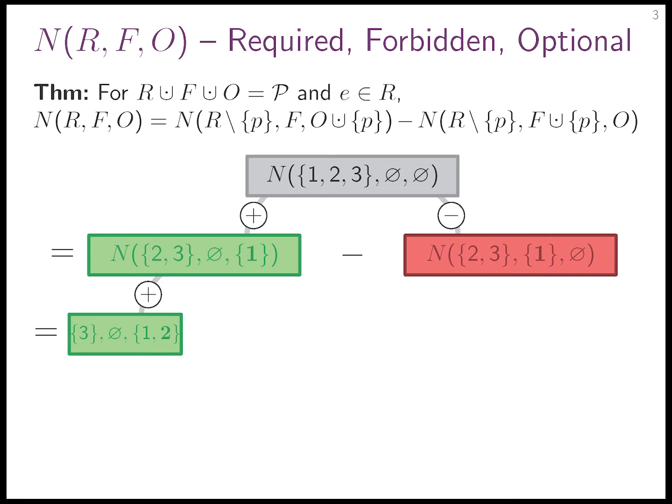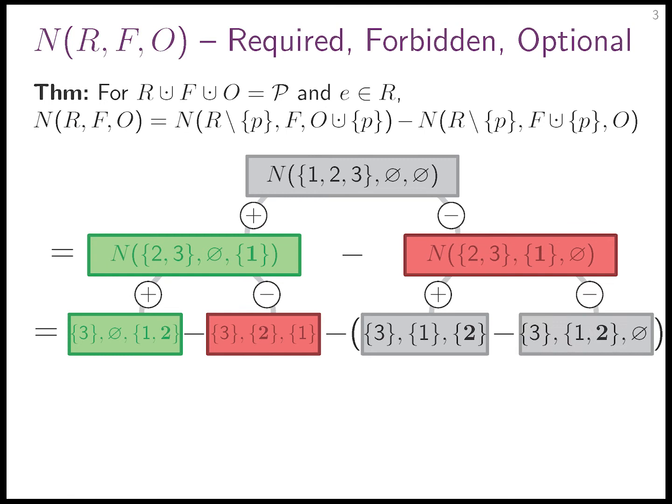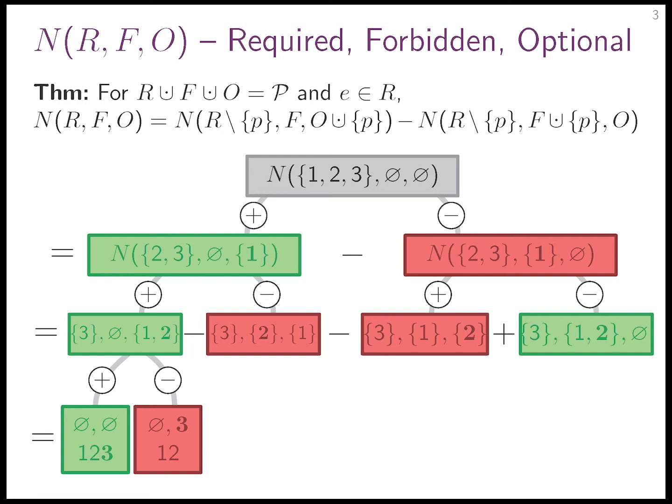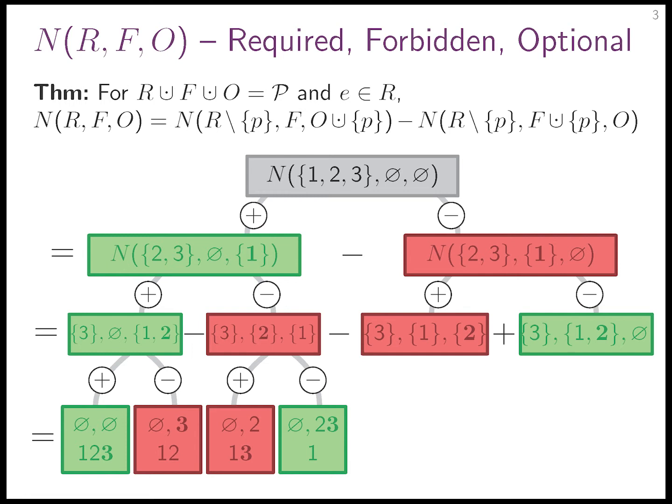We repeat this process. For property 2: on the left branch it either becomes optional or forbidden; on the right, same — but since that term was already negative, signs flip. After this step we have four terms, some positive some negative, but all still have something in R. We continue: branch all four terms on property 3. Now we end up with eight simplified problems where R is empty. Some terms are positive, some negative, depending on how many minuses accumulated.